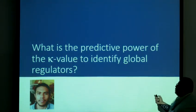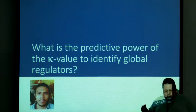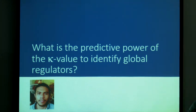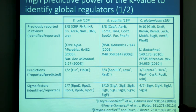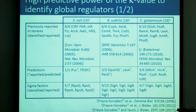What is the predictive power of the kappa value? Are the hubs identified by the kappa value real global regulators — biologically famous global regulators? We reviewed the literature and found that for E. coli, Bacillus subtilis, and Corynebacterium glutamicum, we are recovering the most global regulators previously reported in reviews. In fact, only in Corynebacterium glutamicum are we missing one of them. We have some predictions, and some have been independently reported in previous studies. We are also recovering some sigma factors.